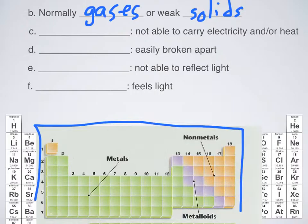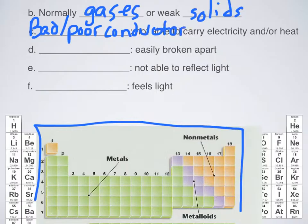They're not able to carry electricity and or heat as well as metals do. In fact, they're the opposite. They're called insulators. But the term we're going to use is bad or poor conductor. So they are bad or poor conductors.